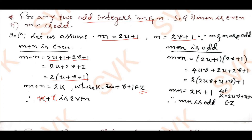Similarly, to prove mn is odd: multiply m and n to get 4uv + 2u + 2v + 1. Taking 2 common from the first three terms gives 2(2uv + u + v) + 1 = 2k + 1, where k = 2uv + u + v belongs to Z. Therefore mn is odd. Hence if m and n are both odd, their sum is even and their product is odd.